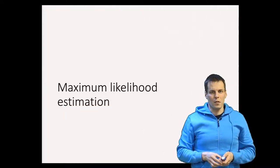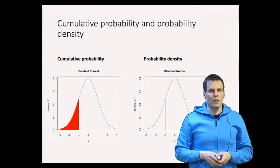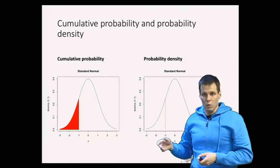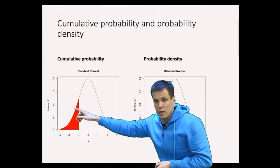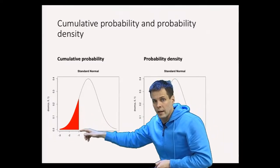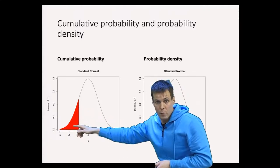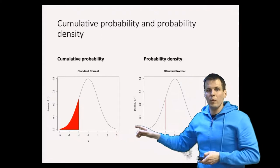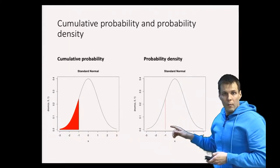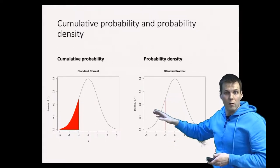To understand maximum likelihood estimation, we first need to understand a couple of concepts from probability. The first two concepts are probability density and cumulative probability. The p-value quantifies the cumulative probability — the area under the curve — which quantifies how likely a value of less than minus one is from a normal distribution centered at zero with a standard deviation of one. Probability density tells us how probable a value of minus one is compared to any other value of the distribution.